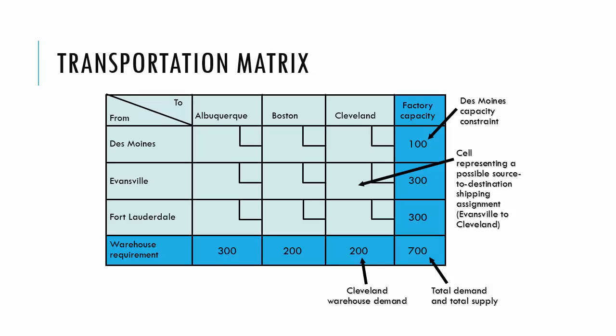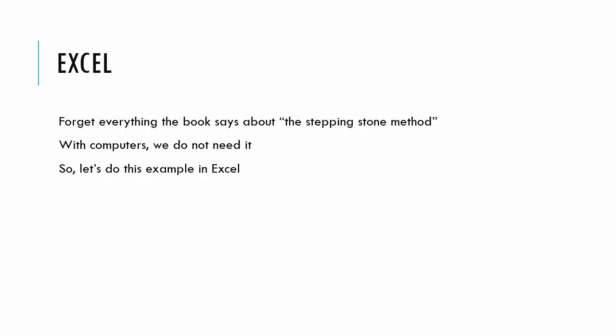In a traditional LP, we used columns to represent variables and rows to represent constraints. In this model, we can make it more compact by keeping it in a form that looks like the transportation matrix. After introducing the transportation matrix, the book goes on to describe the stepping stone method to solve this type of problem. While that is fun if you are bored and have lots of time and the problem is small, there is a better way to solve these problems — use Excel. So, let's look at this example in Excel.